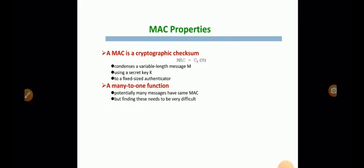So what are the properties of MAC? MAC is a cryptographic checksum. So we can represent that as MAC equals CK of M, where C is MAC computation, K is the key and M is the message. So it uses the variable length message M and the secret key K. And it produces the fixed size authenticator. And it performs many to one function. That is, potentially many messages have same MAC, but finding these needs to be very difficult.